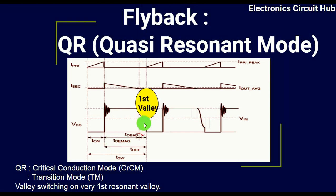You can see the first valley here. In quasi resonant mode, valley switching occurs at the very first resonant valley. We will understand in more detail in the upcoming slides how quasi resonant mode works for the flyback converter.